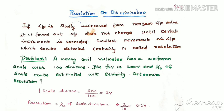Next is resolution, which is also known as discrimination. If input is slowly increased from a non-zero input value, it is found that the output does not change until a certain increment is exceeded. The smallest increment in input which can be detected with certainty is called resolution. In a system, sometimes when we increase the input there is no immediate change in output — only after a definite value of input has increased is there a change in output.